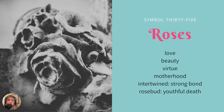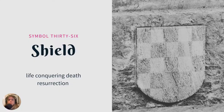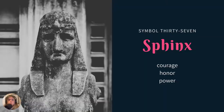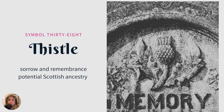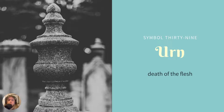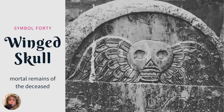Roses — Victorians loved roses. Lots of different meanings: love, beauty, virtue, motherhood. If you see them intertwined, it could be a strong bond. If you see a little rosebud, that could be someone who died in youth. A shield, again with the resurrection message, represents life conquering death. A sphinx — it represents courage, honor, and power. Find this on an ancestor's tombstone and it'll tell you a lot about their personality. A thistle represents sorrow and remembrance and could indicate potential Scottish ancestry. An urn represents the passing of life, the death of the flesh, the soul leaving the body behind — pretty popular in cemeteries.